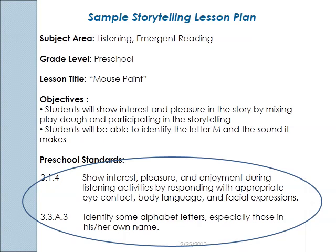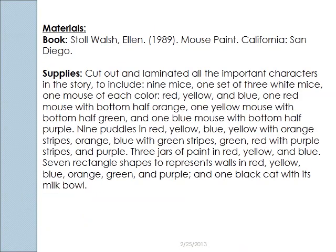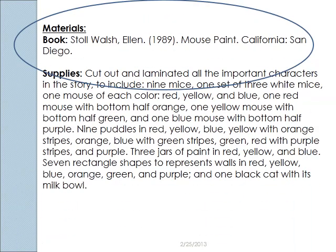'Students will show interest and pleasure in the story by mixing Play-Doh and participating in the storytelling.' And then we've got standard 3.3 A3: 'Identify some alphabet letters, especially those in his or her own name.' I've chosen the alphabet letter M because it goes really well with the book called Mouse Paint. Now let's see how we do the anticipatory set. The materials are going to be the book and the supplies, and notice that I've written a lot of supplies.